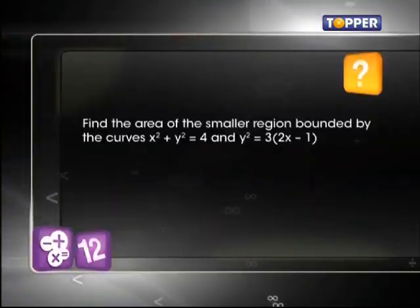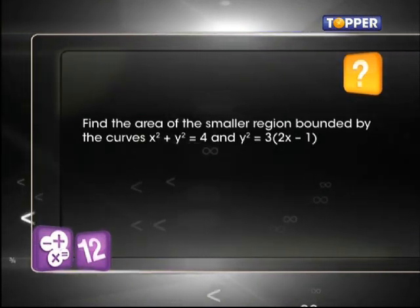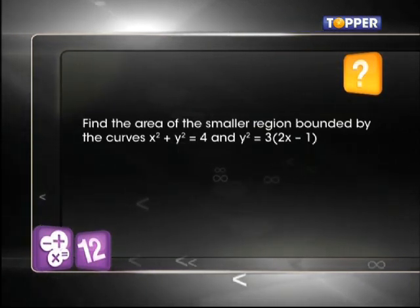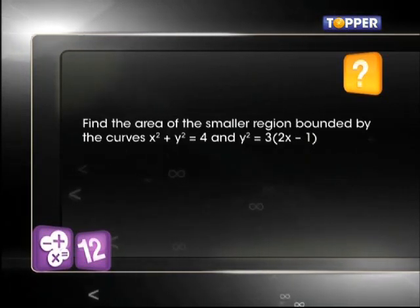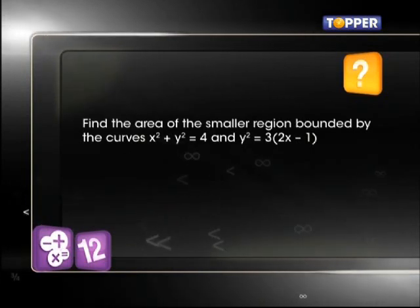If not, here's another one. This is also a 6 marks question based on finding the area between a circle x² + y² = 4 and a parabola y² = 3(2x-1). Take a look at the solution.